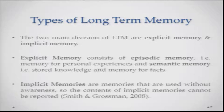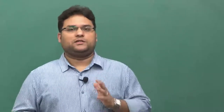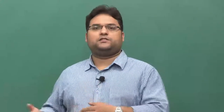Explicit memory is simply that memory that you can recall, describe, and talk about in more detail, while implicit memory is that about which you cannot talk in detail, but you can certainly demonstrate by performing a particular skill or engaging in a particular task. Explicit memory consists of two parts: episodic memory, which is memory for personal experiences — for example, describing a summer vacation spent at a grandparent's house.